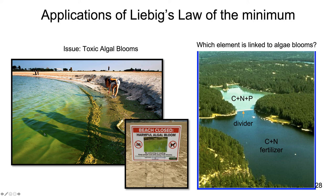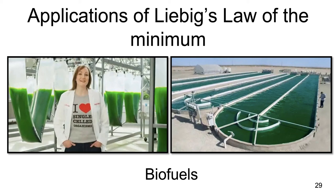Other applications of Liebig's Law of the Minimum include the use of biofuels, since many biofuels are based on growing photosynthetic algae. To grow as much algae as possible as efficiently as possible, you need to figure out what's the limiting factor — is it sunlight, water, a macronutrient, or a micronutrient? Balancing all of those things perfectly to get maximum yield is a great application of Liebig's Law, tweaking all available nutrients to maximize algal growth and produce as much biofuel as possible.